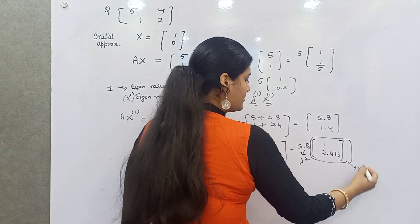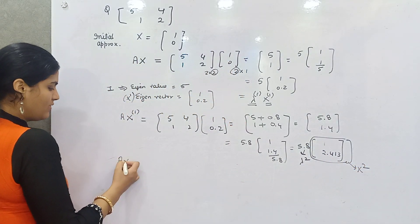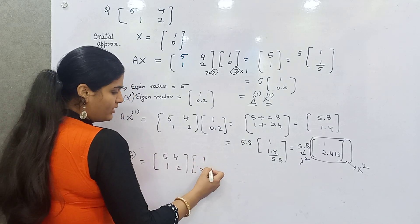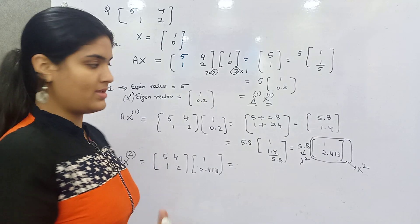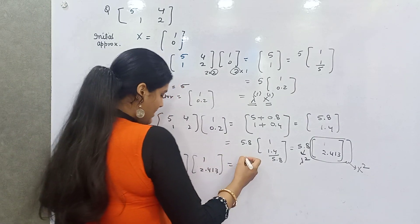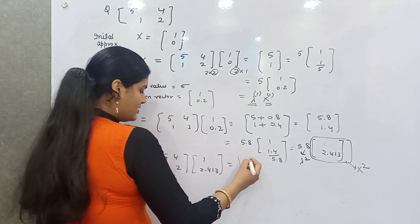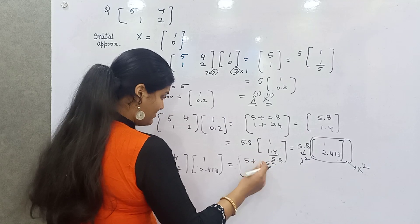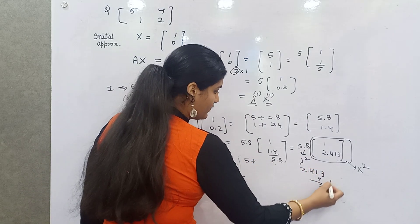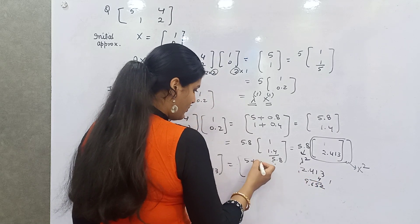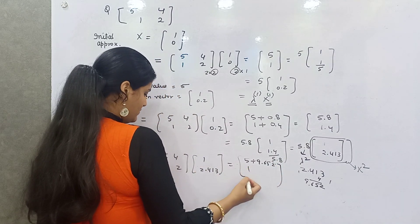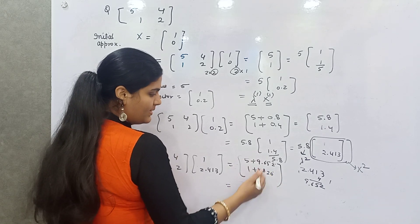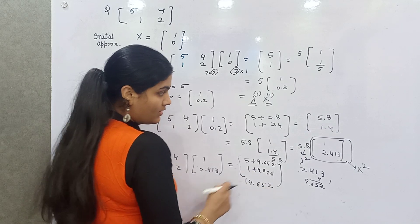Now moving on again, you have to take X to the power 2. So A is [5,4; 1,2] and X to the power 2 is [1; 0.241]. You can take up to 3 decimals. If you multiply this, 5 times 1 is 5, 4 times 0.241: 4 times 4 is 16, 4 to the 8, 9. So this will be 5.964. Then 1 times 1 is 1, 2 times this is 1.482.